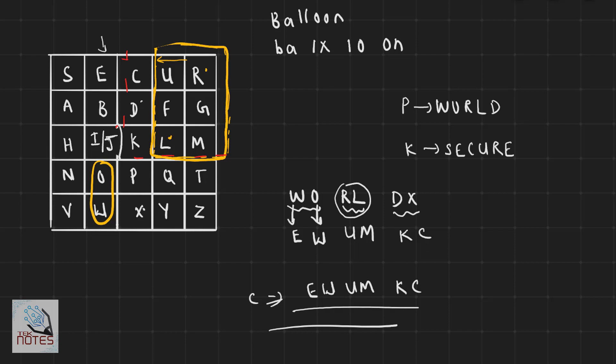If the two letters fall in the same row of the matrix, you replace each letter with the letter to its right, circularly. For example, S and C are in the same row, so S is replaced by E, and C is replaced by U.